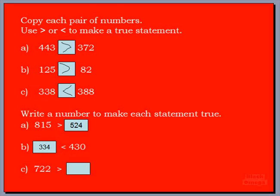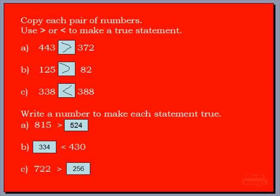One more to go — 722 is greater than the number on the right, so that number could be anything smaller than 722. I'm going to put 256 just for fun. Let's read it together: 722 is greater than 256. I think that's correct — any number smaller than 722 would make this statement true. Fantastic job, boys and girls!